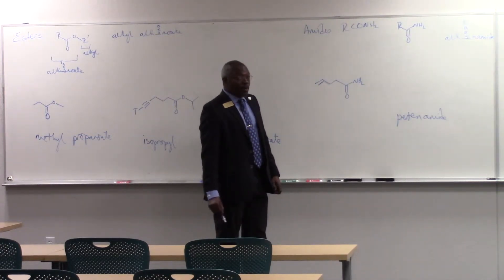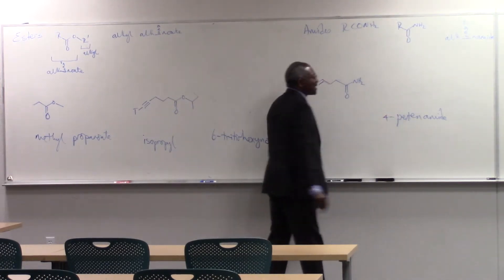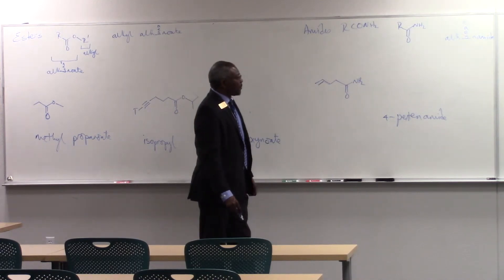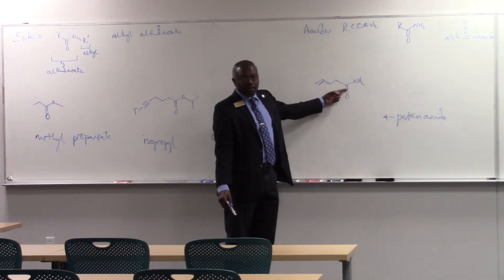I'm going to say where the double bond is. So it's carbon 1, 2, 3, 4. So it's 4-pentanamide. Or pent-4-enamide. I don't need to be enamide because that's the carbon, that's the major functional group. So that's going to be there.